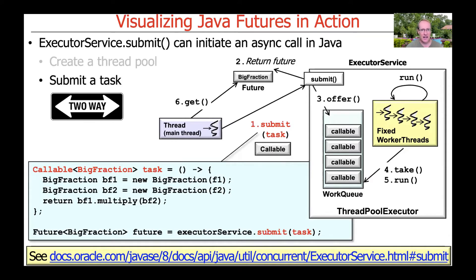Then we go ahead and submit a task. This task happens to be a two-way task, which means you pass some information in and eventually get results back, but the actual call itself will be run asynchronously. We make something called a task, which is a Callable. A Callable is essentially a functional interface defined initially in Java 5, where you can pass in information in the form of effectively final variables, and then have that task submitted for execution by calling submit.